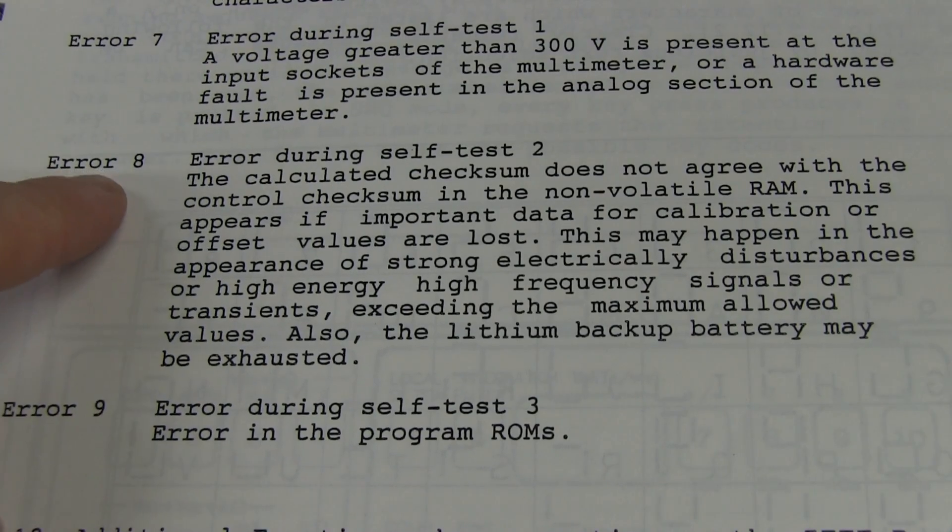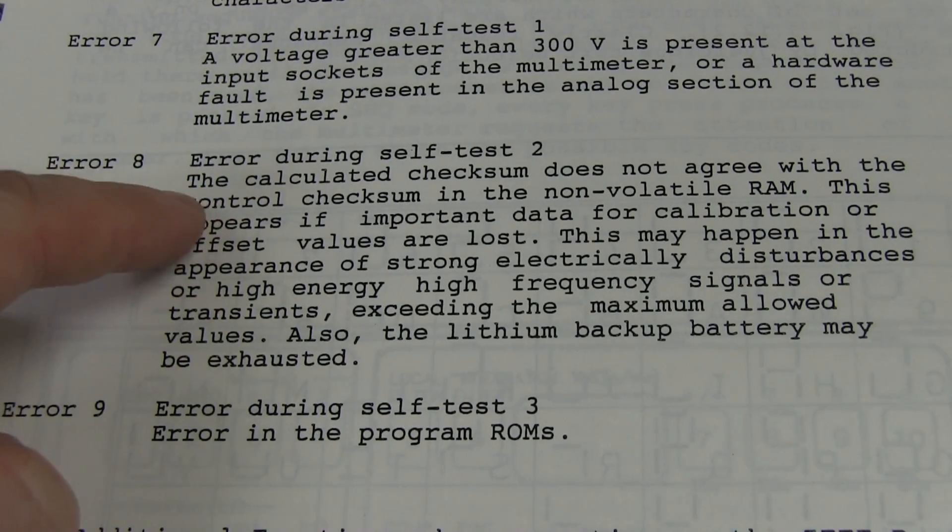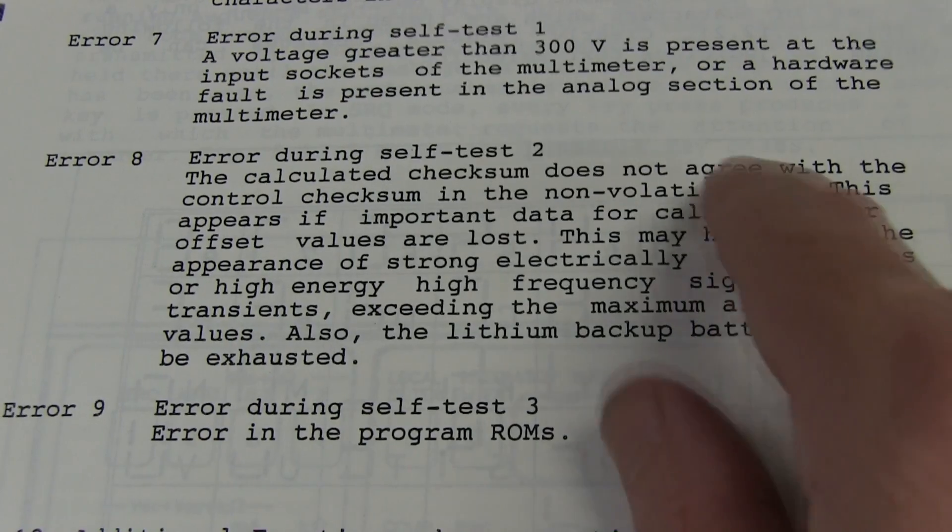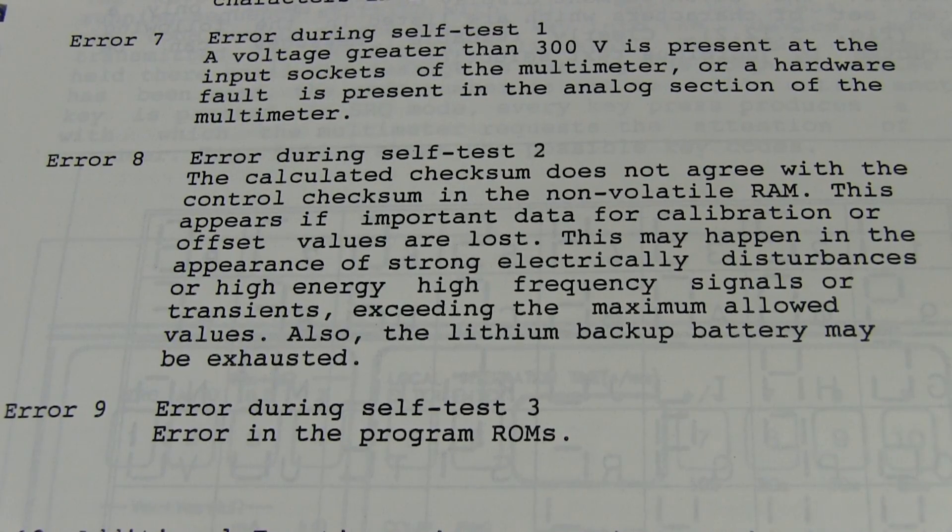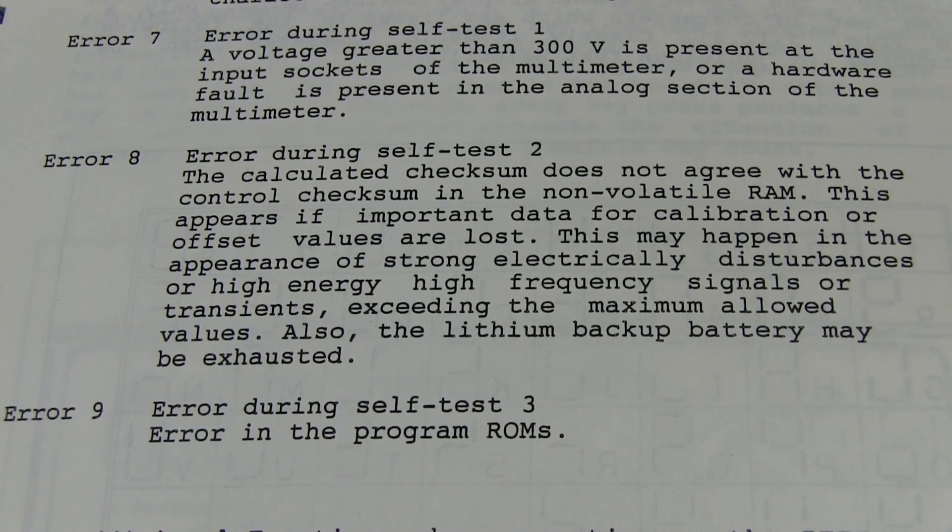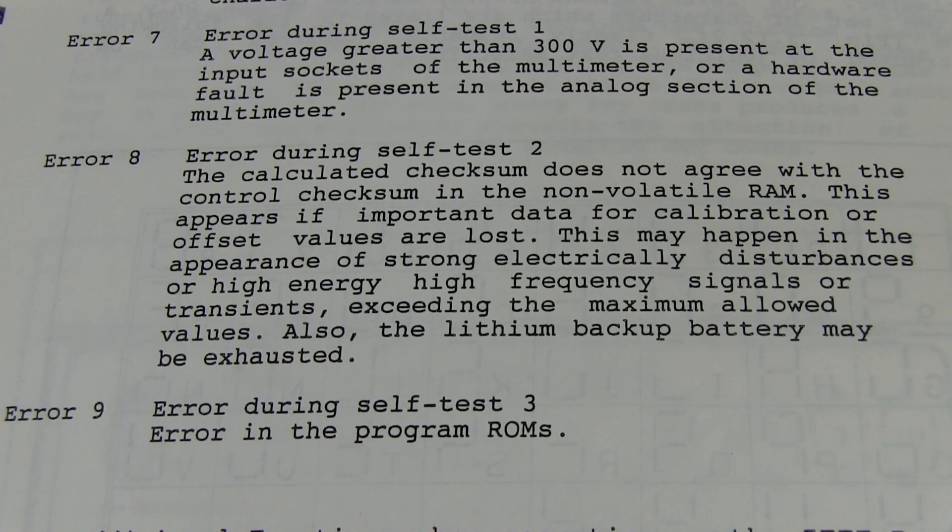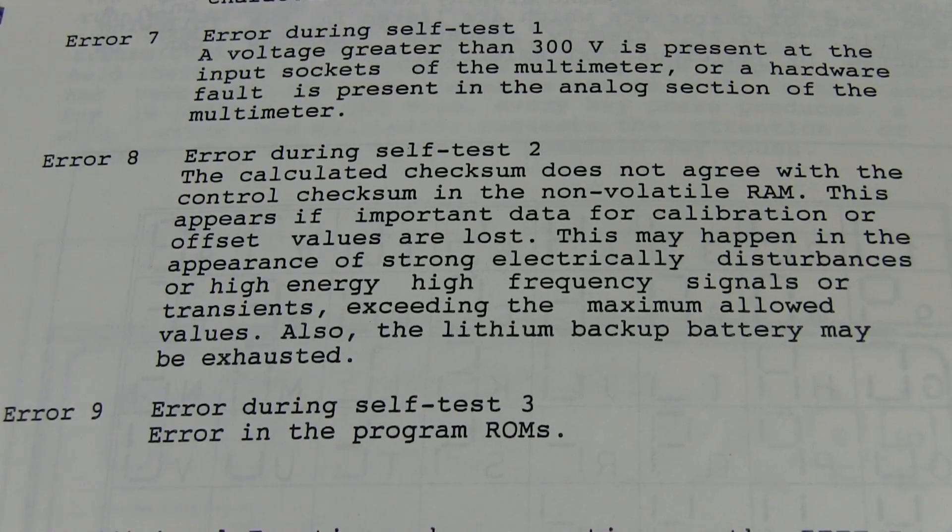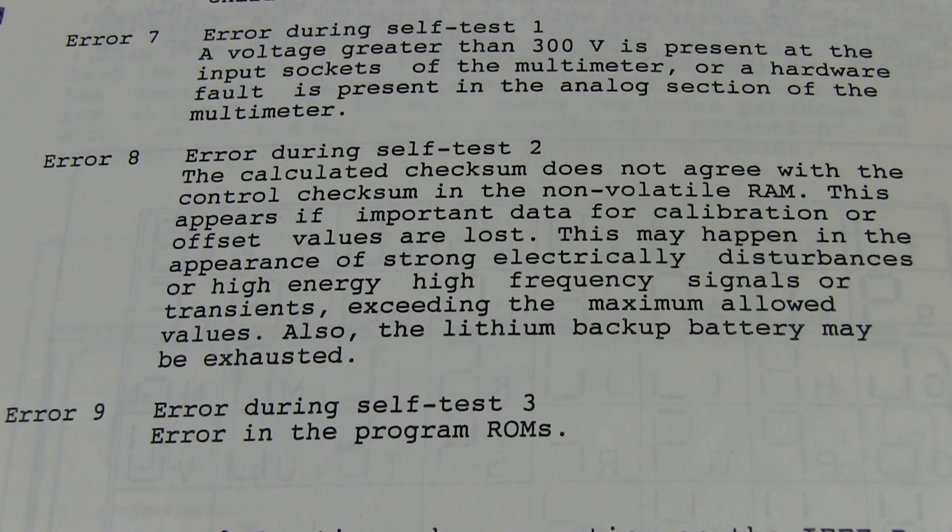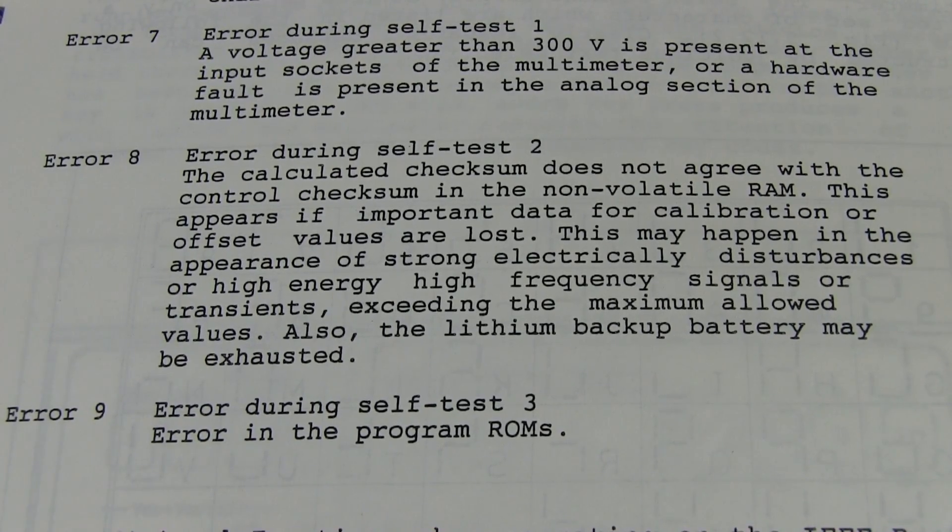I'll have to read the manual, I guess, see if we can get something on error 8. Bingo, there you go, error 8. Error during self-test, it compares as I suspected, it compares the checksum with the one in the non-volatile RAM, that Dallas chip. So obviously for this thing to power up previously, that Dallas chip must still have the correct data in there. Otherwise it would give you an error 8 every time you boot up. So the Dallas chip has to be good.